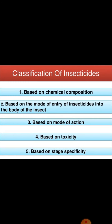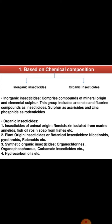Classification of insecticides: we classify insecticides on the basis of five groups. First, on the basis of chemical composition — what type of elements or compounds they contain. Second, on the basis of mode of entry into the body of the insect — whether through the mouth or other parts. Third, mode of action — how the insecticide produces its effect. Fourth, on the basis of toxicity. Fifth, based on stage specificity.